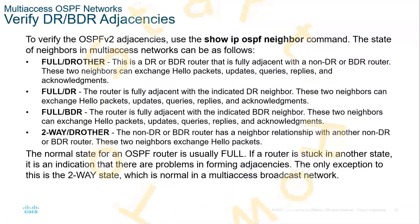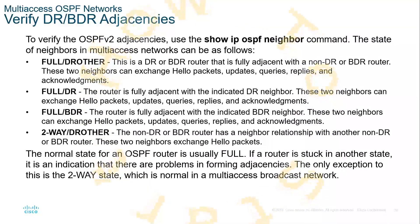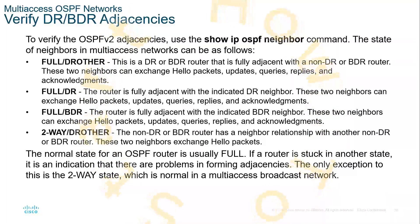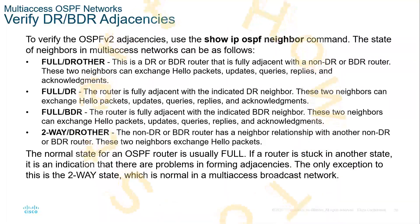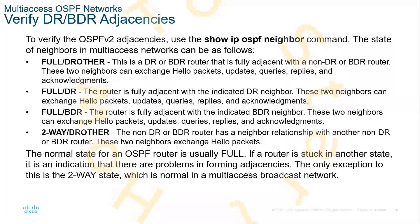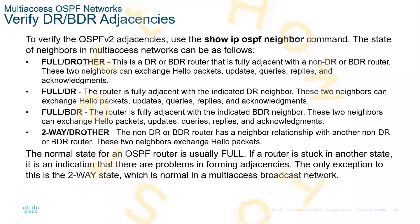A full BDR indicates full adjacency with the BDR neighbor, and these two neighbors can also exchange hello packets, updates, queries, replies, and acknowledgments. A two-way drother is when two non-DR or non-BDR routers have a neighbor relationship with each other — they can exchange only hello packets. The goal is to have drotherss exchange hello packets, updates, queries, replies, and acknowledgments only with the DR and BDR. So if a router sees its neighbor as a drother, it can only send a hello packet and nothing else.